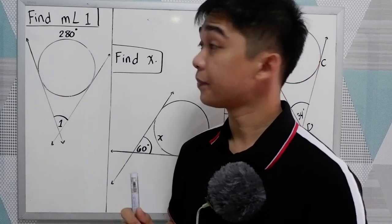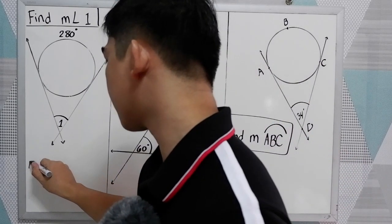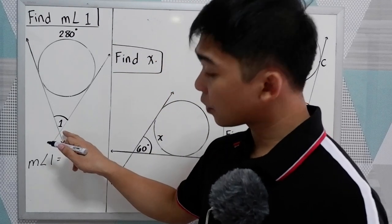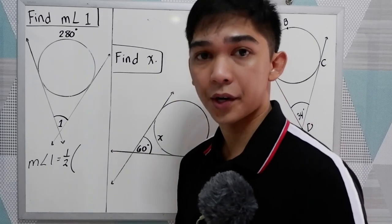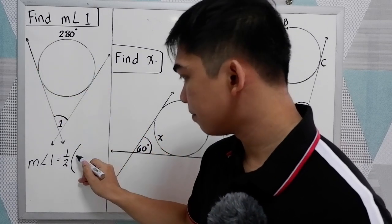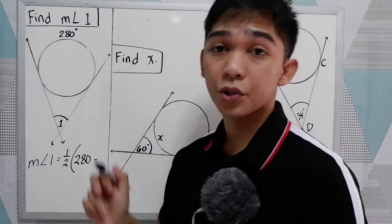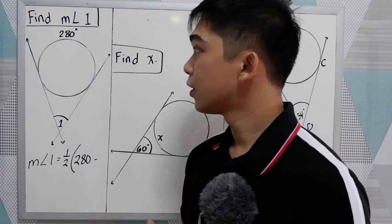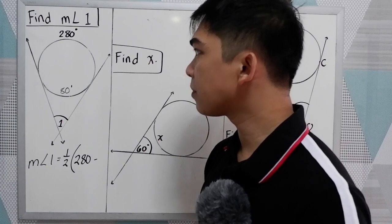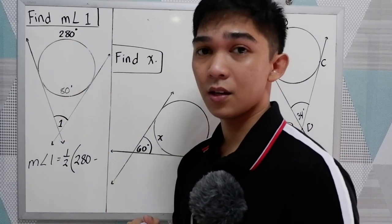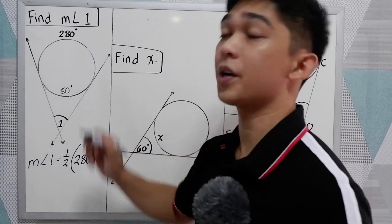So let's try to solve number 1, find measure angle 1. So angle 1 is here, so we need to find measure angle 1. We know that the measure of the exterior angle is one-half of the difference of the intercepted arcs. So we have 280 minus, we know that one revolution is equal to 360. So this arc measures 80 degrees. Why? Because 280 plus 80 gives us 360. So 280 minus 80, that would be our arc.